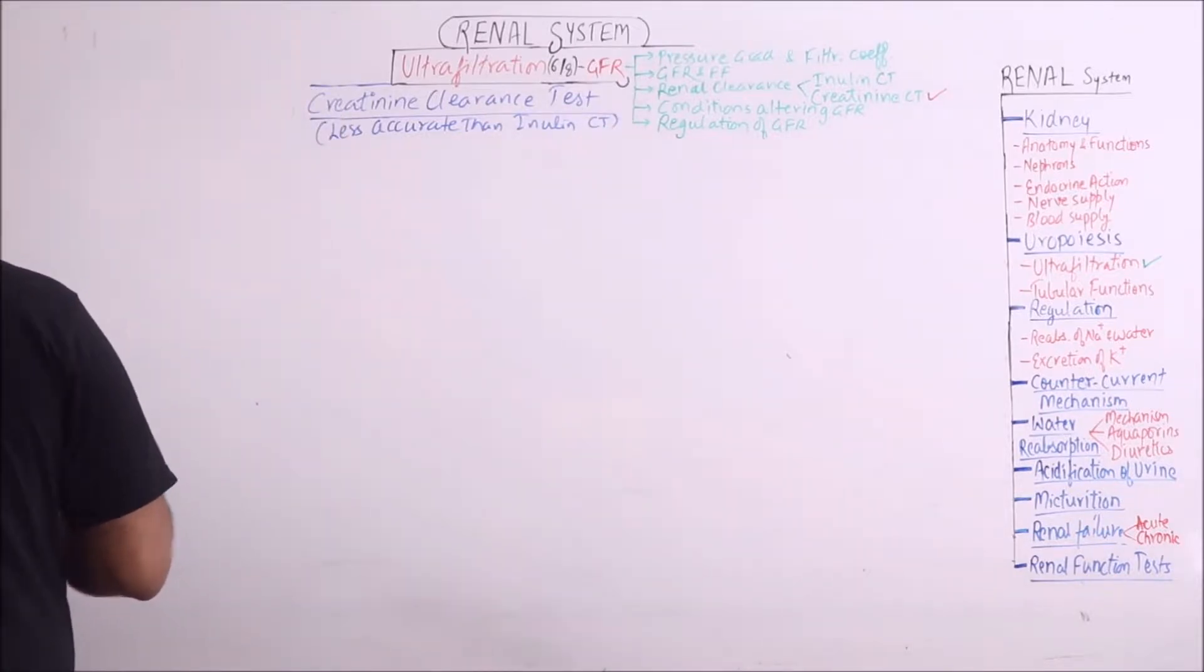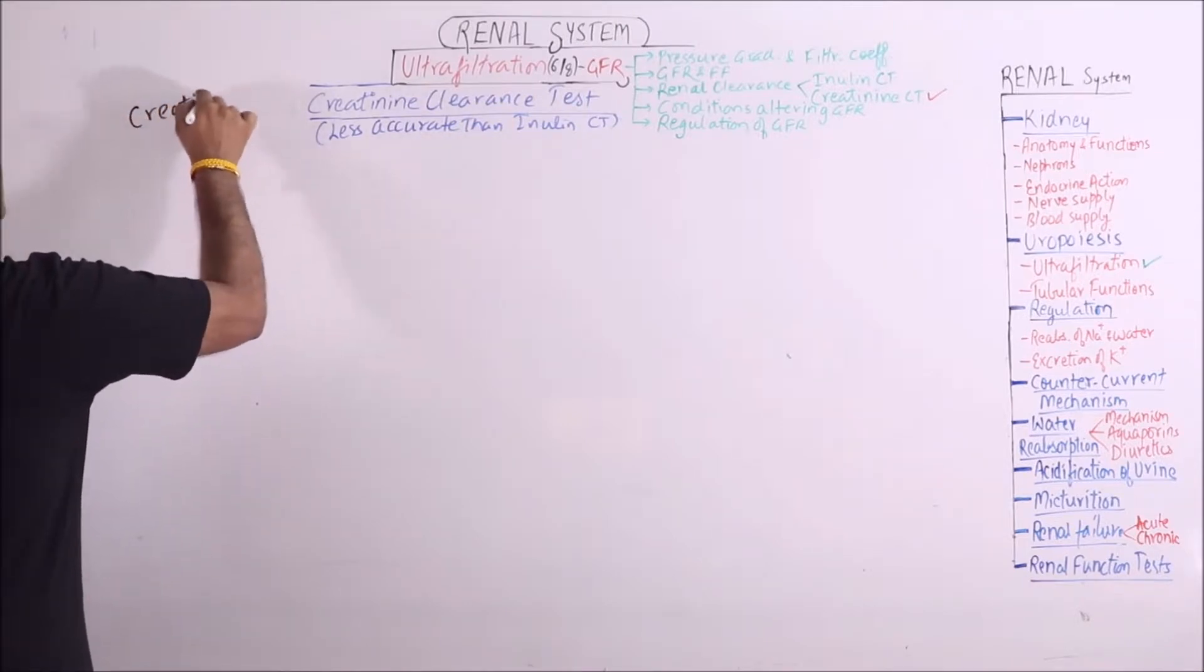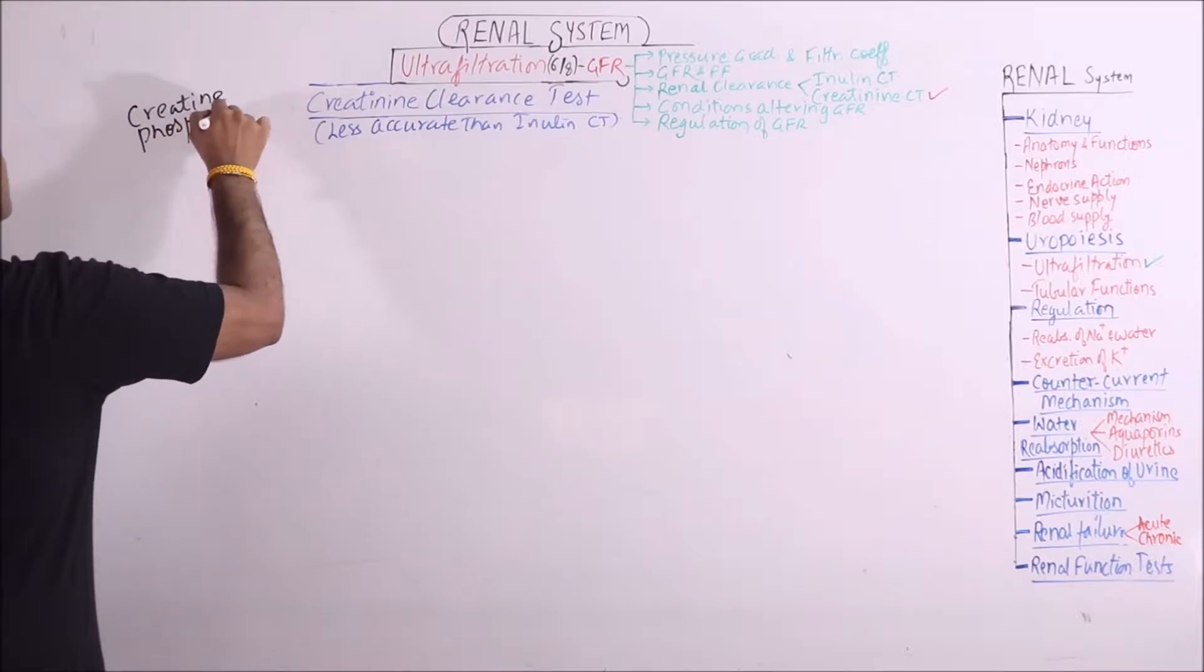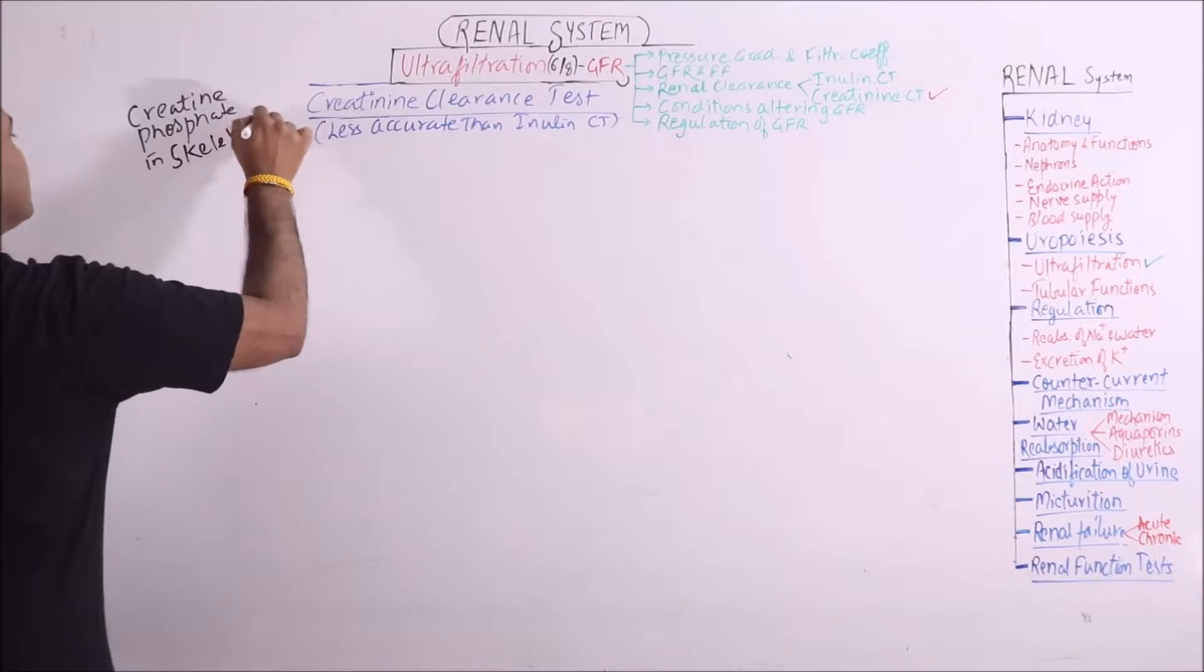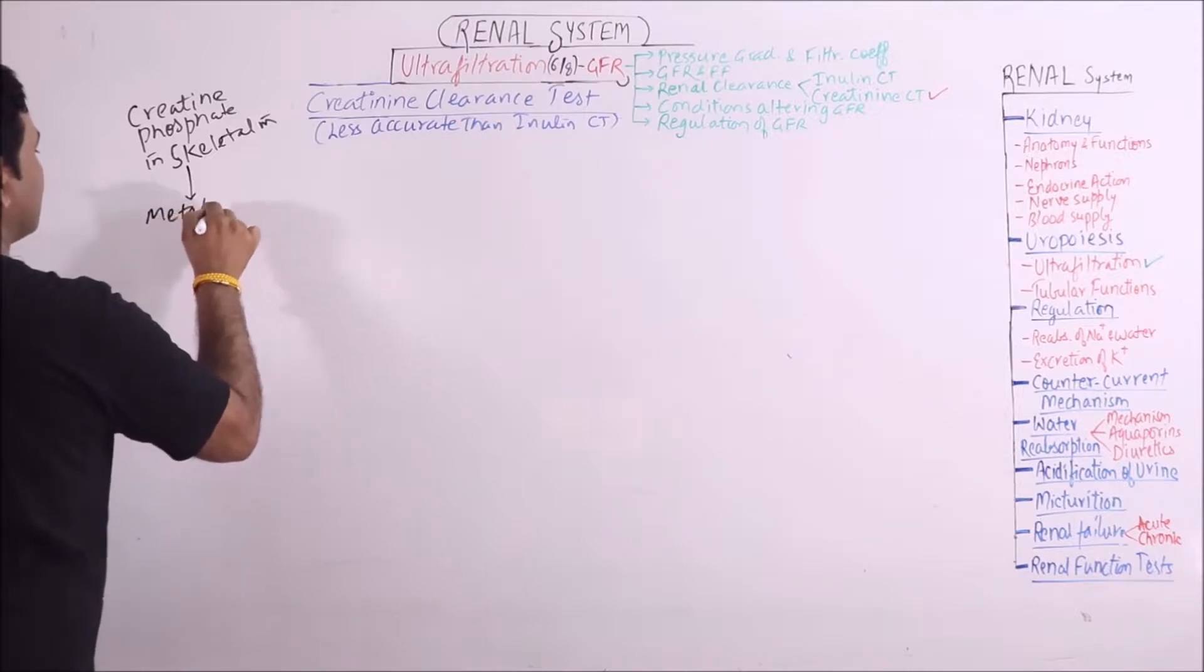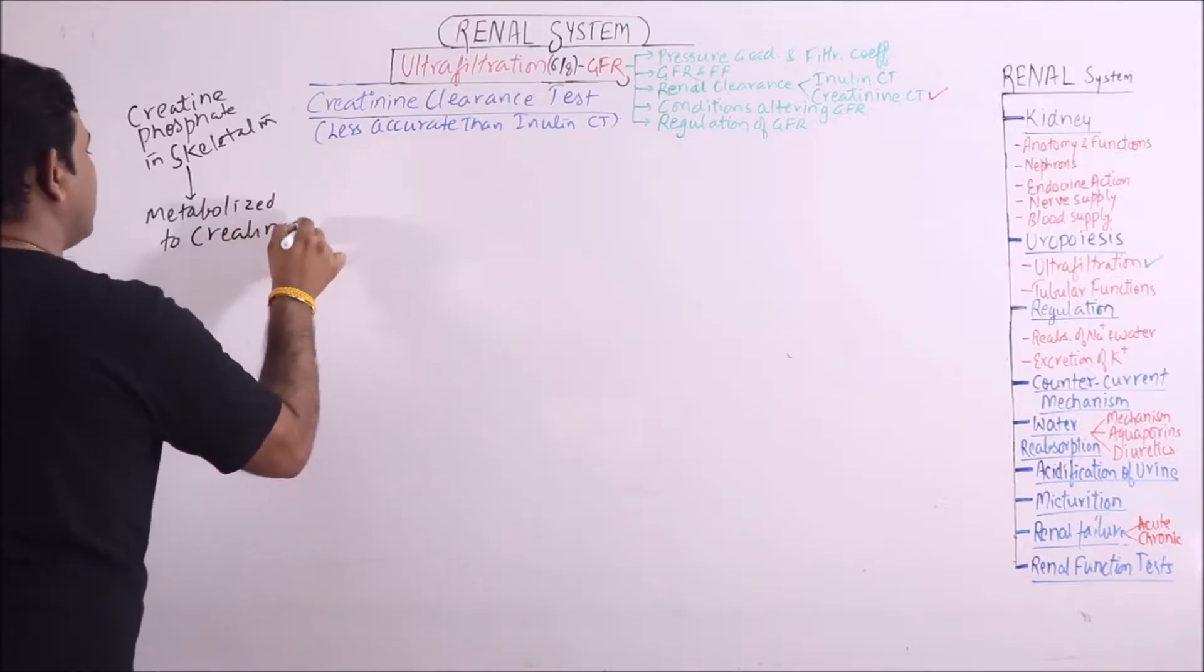Now first of all we will discuss what is creatinine. There is a substance creatinine phosphate in skeletal muscles and that is continuously metabolized to creatinine.